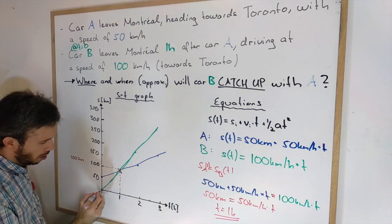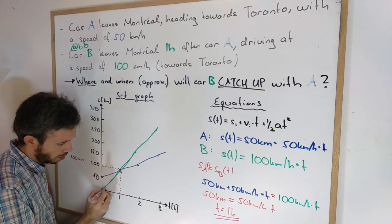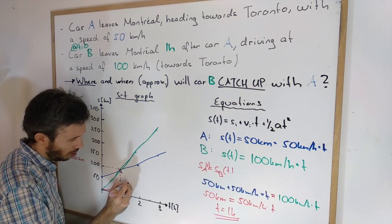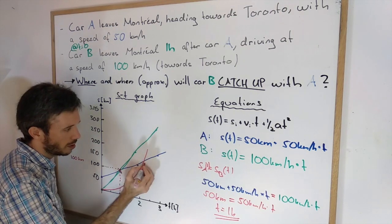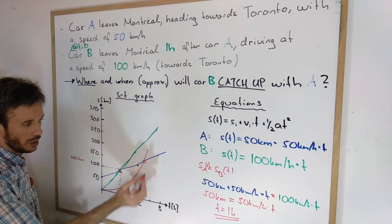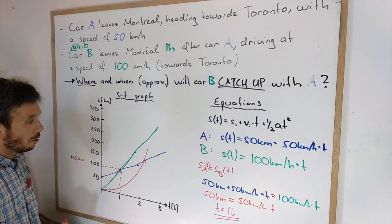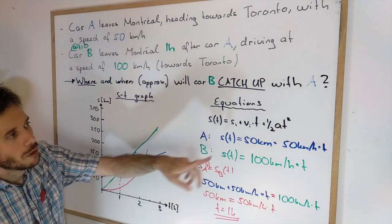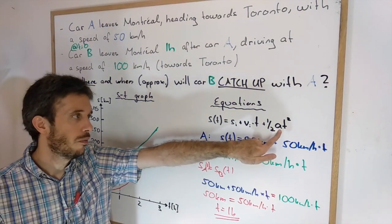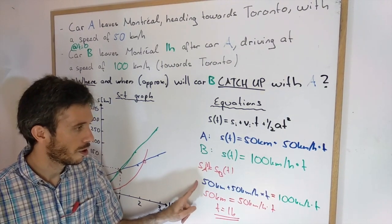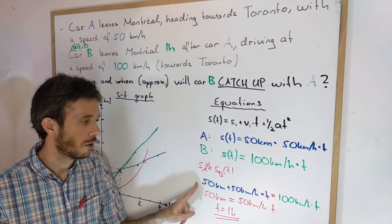I could have a curve like this. And this would be the point where I'm meeting or catching up with car A. And in the equation then you would have a term with the t-squared, and your equation here to solve will become a quadratic equation to solve.